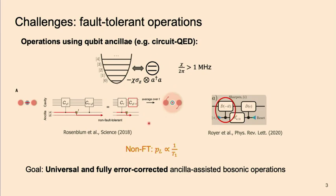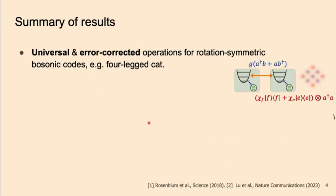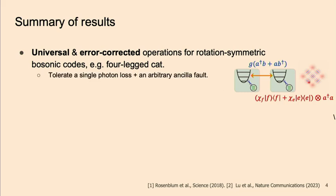In particular, they are fault-tolerant against those detrimental ancilla errors. The key result we have is the construction of a universal set of error-corrected operations for rotation-symmetry codes, such as the four-legged cat qubits. The code words are a superposition of four coherent states. All these constructed gates can tolerate a single photon loss and arbitrary ancilla faults, so we can achieve first-order fault tolerance.